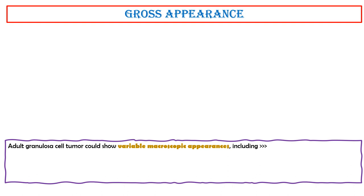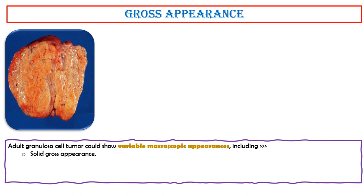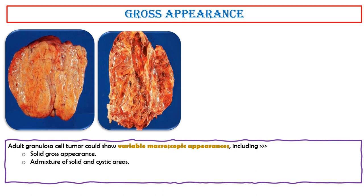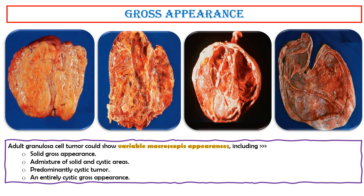Adult granulosa cell tumor can show variable macroscopic appearances, including a solid gross appearance, a mixture of solid and cystic areas, a predominantly cystic tumor, and an entirely cystic gross appearance.